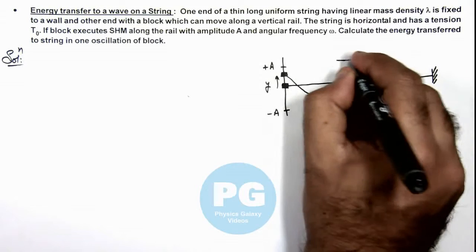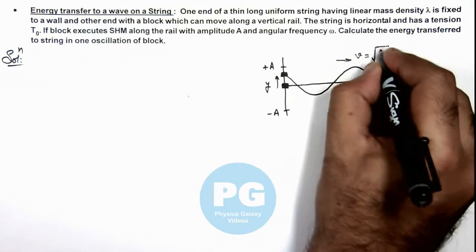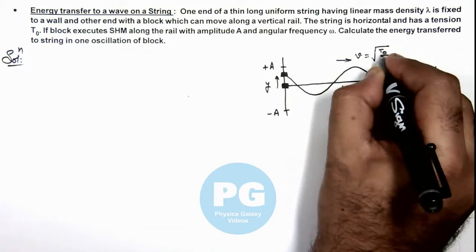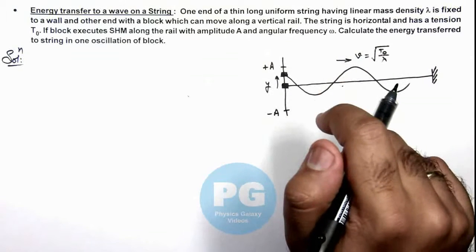The wave starts propagating in the string with a velocity v which is given as root of T₀ by lambda, as the tension in the string is T₀ and lambda is the linear mass density of the string.